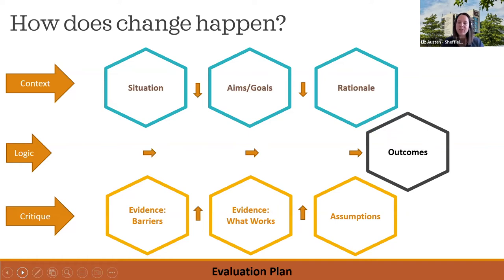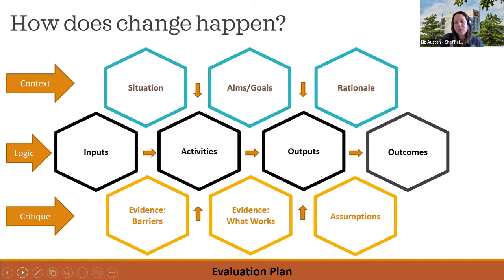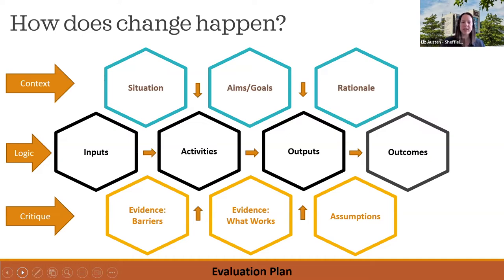Once we've done that, we start thinking about outcome-led or theory-led change processes. Focusing attention on outcomes forces us to ask: what will change look like, how will it be designed, and how will we move beyond simply addressing our activities and outputs toward what we want to achieve? We then think about the mechanisms for change—how change is happening—so we're talking about not just what we've done, but why we've done it. All of this contextual theorising leads into a well-crafted evaluation plan.